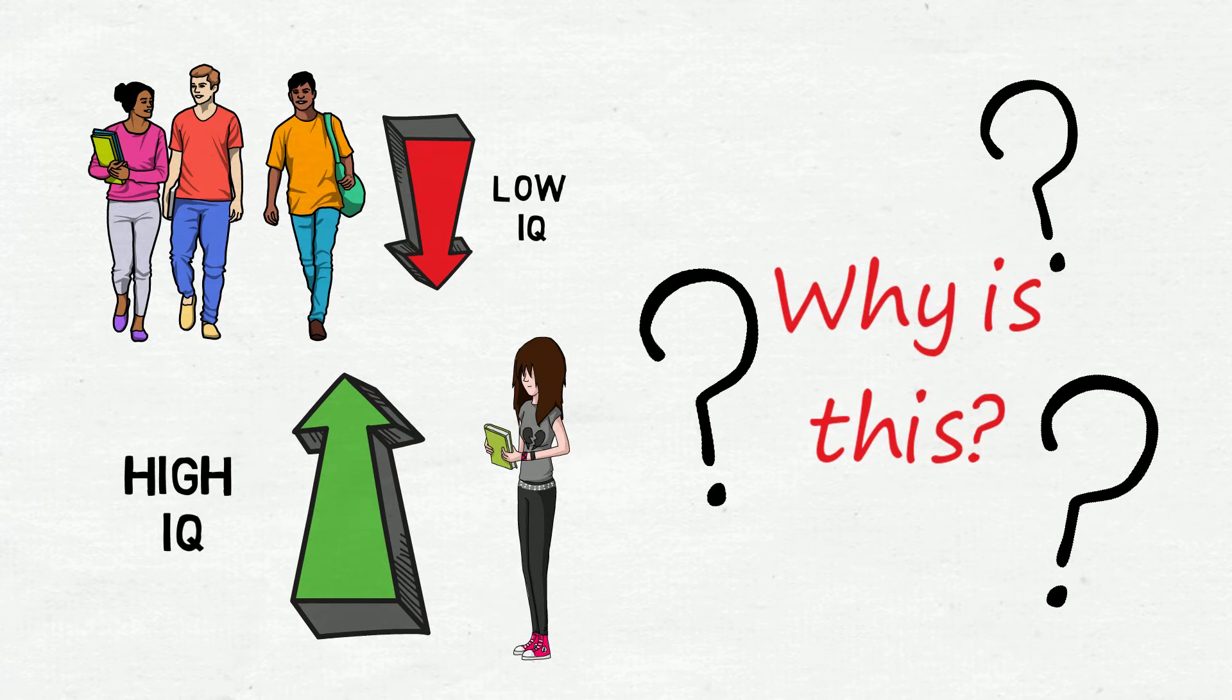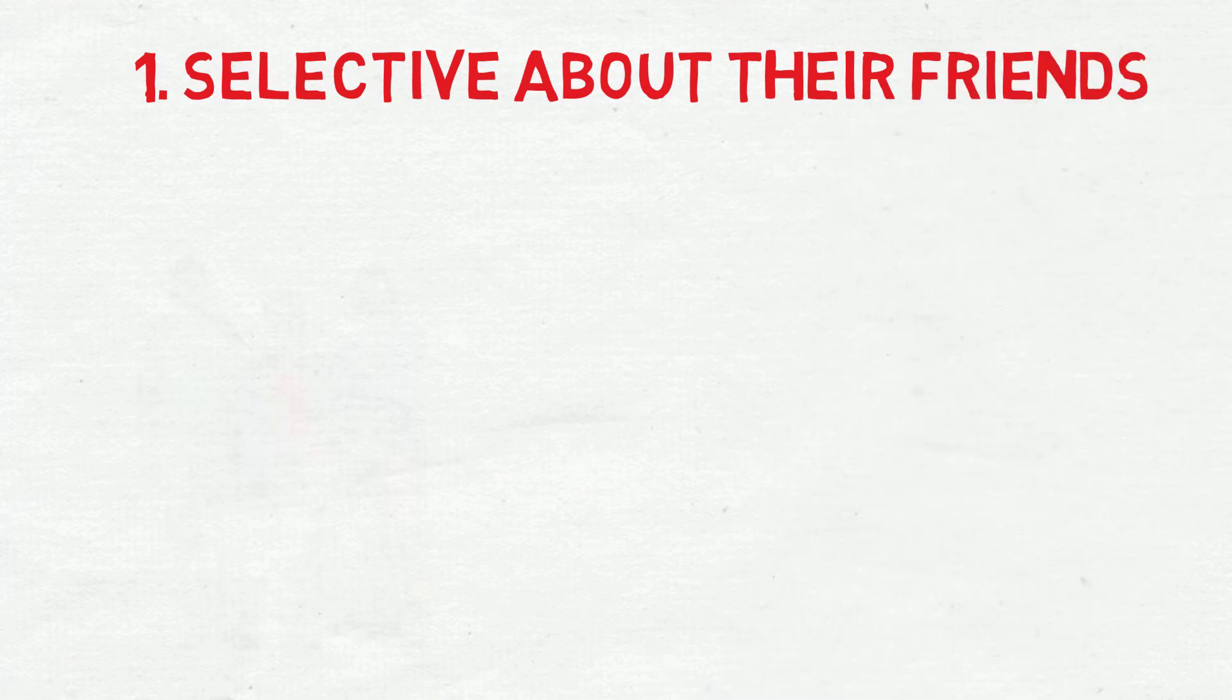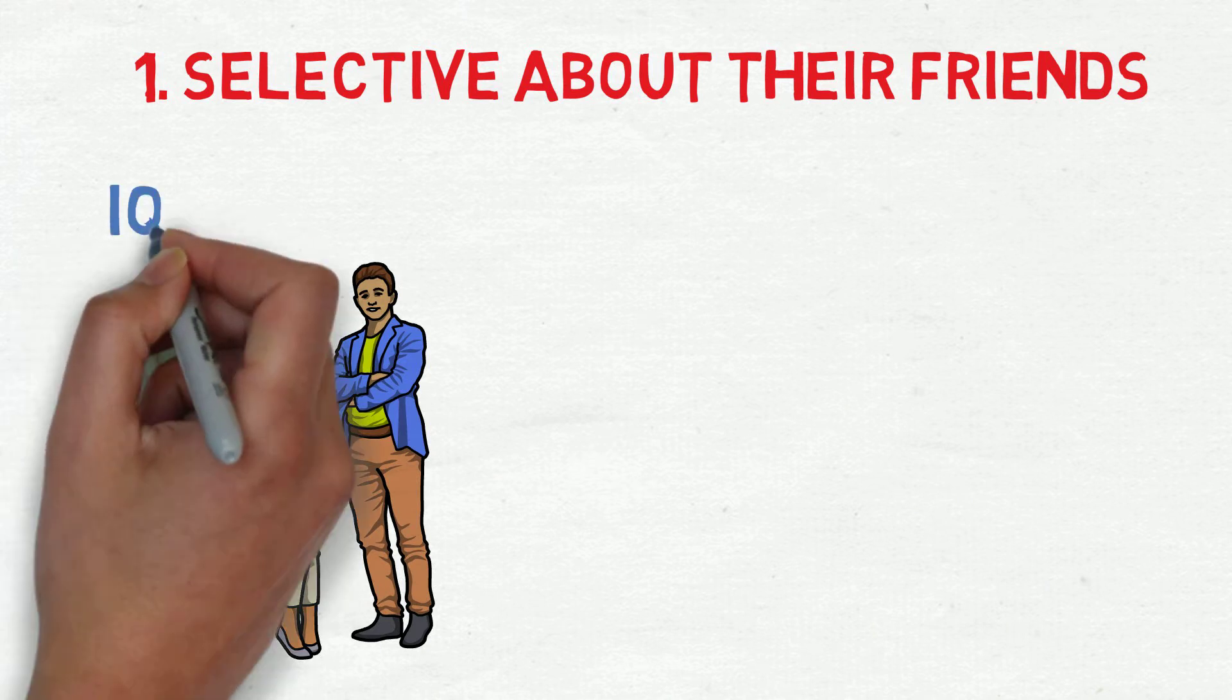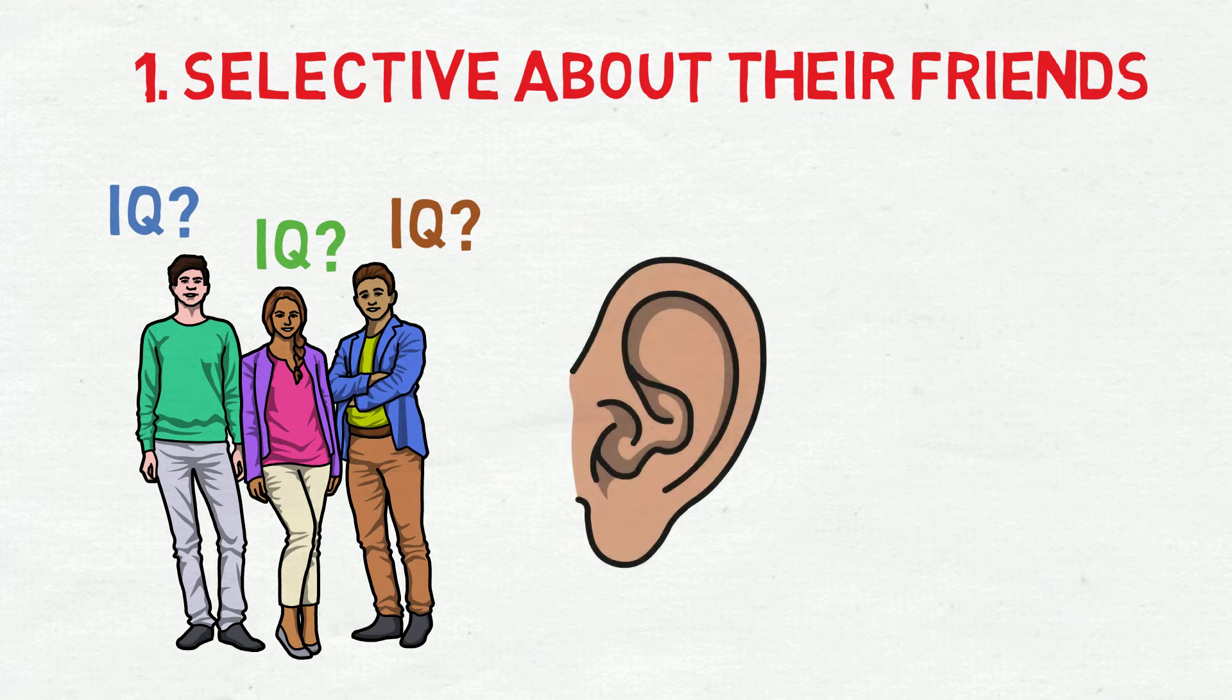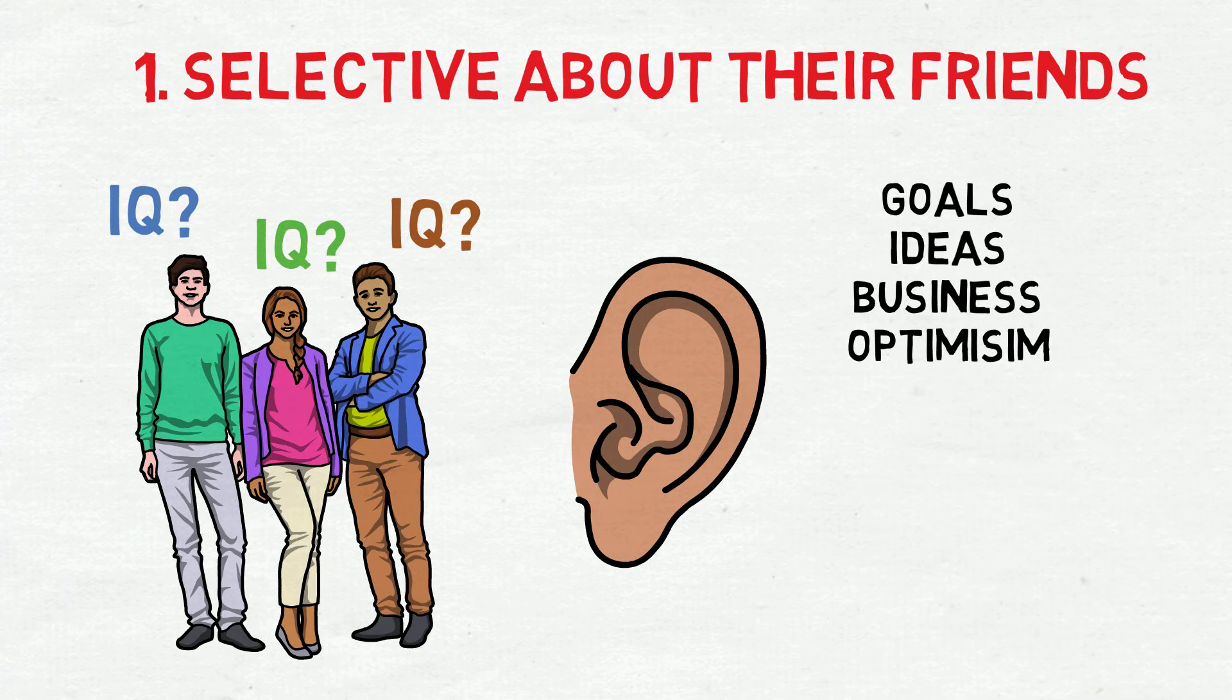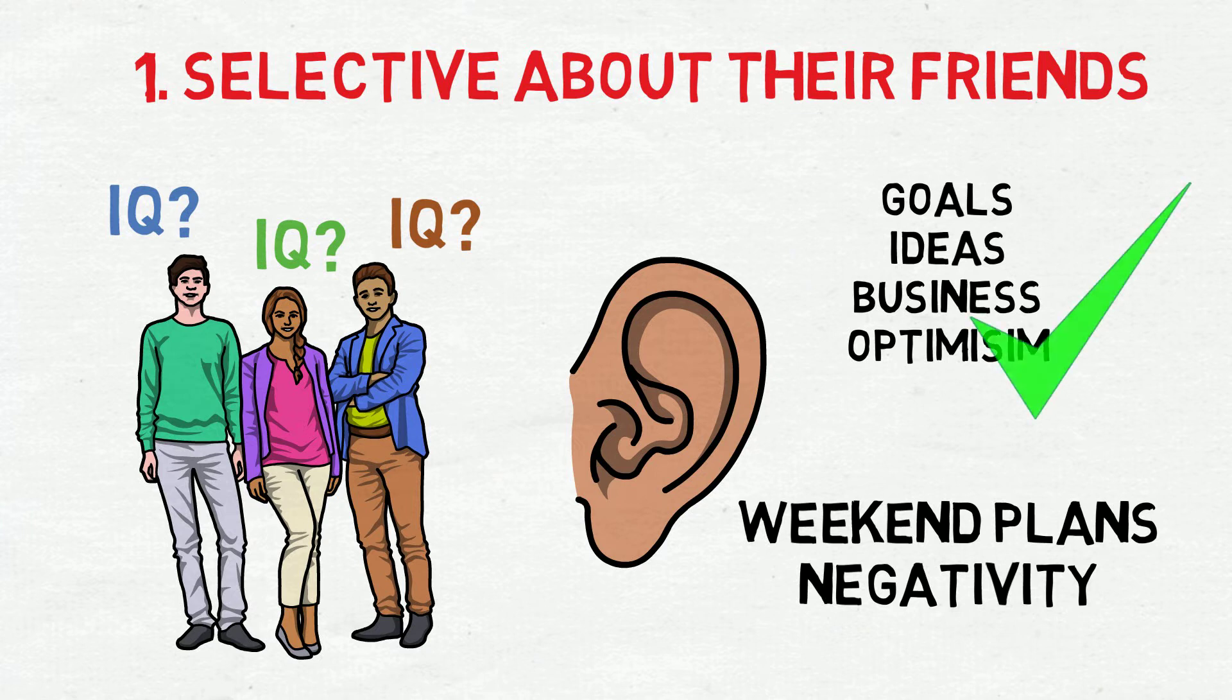We found eight reasons. Reason number one, they are very selective about their friends. Look, it's not like smart people test IQs before they decide to be friends with you or not. However, they are likely very attentive when you speak about your goals, ideas, businesses, and even if you are optimistic or pessimistic most of the time. If you are doing interesting things, have big ideas, or talk about execution and goals, you might be a candidate. But let's face it, most people talk about their plans for the weekend. This doesn't interest a smart person beyond casual conversation.